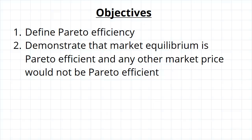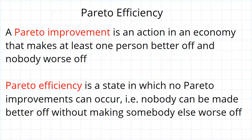To define Pareto efficiency, we first need to define what's called a Pareto improvement. This is any action or any change in the market that makes at least one person better off and nobody worse off — so at least one person benefits, but nobody has to suffer for it.